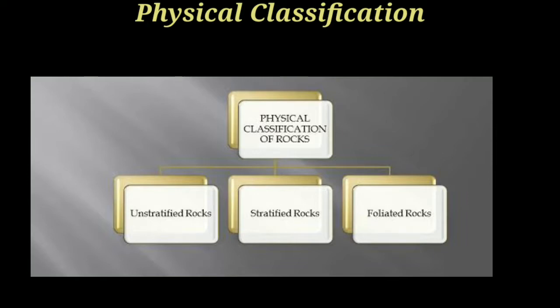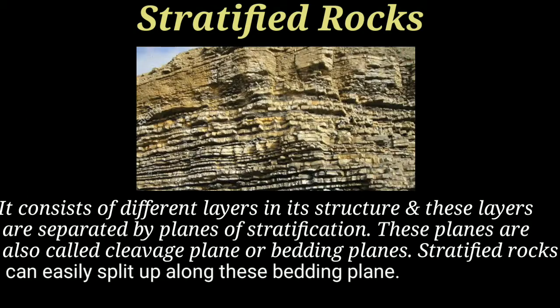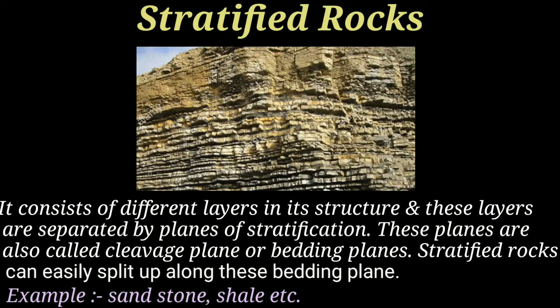So what are stratified rocks? They consist of different layers in their structure, and these layers are separated by planes of stratification. The structure is layered, as you can see in the figure. Stratified rocks are divided along two planes — horizontally and vertically — and these rocks are easily split along the bedding plane. Stratified rocks are found in sedimentary rocks.